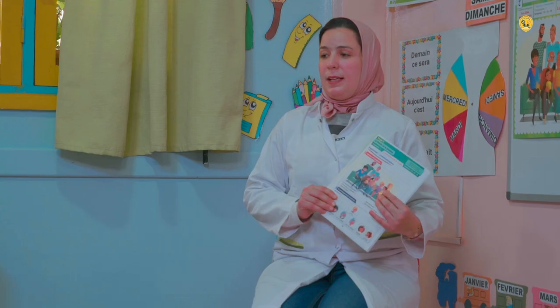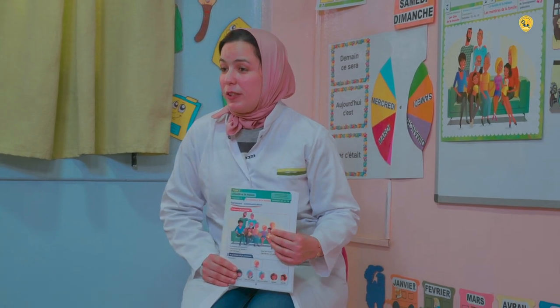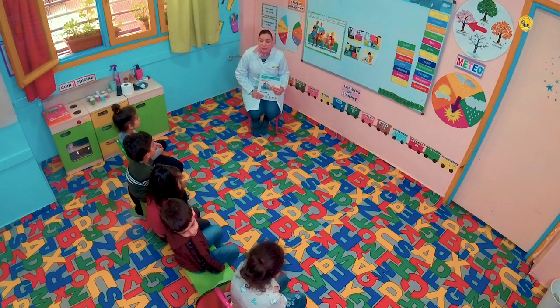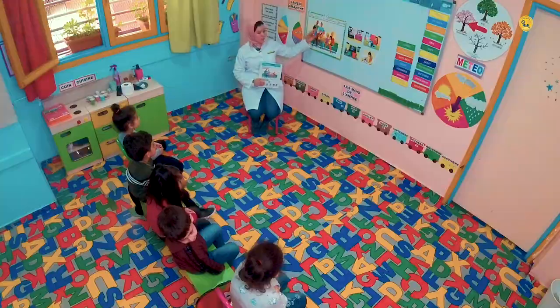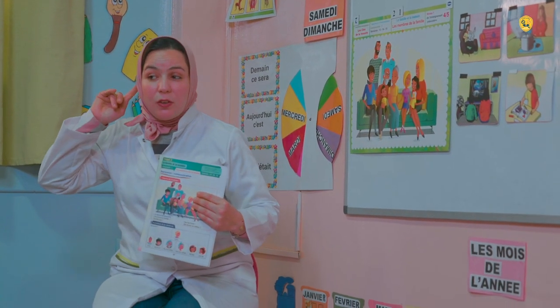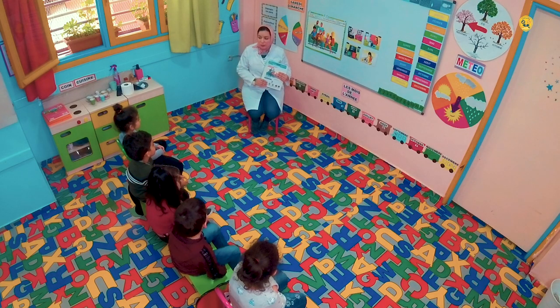La première étape consiste à faire écouter le texte et observer le poster. Allez, aujourd'hui les enfants, on va découvrir ensemble la famille de Lina. La famille de Lina, d'accord ? Ouvrez grand les oreilles et écoutez.